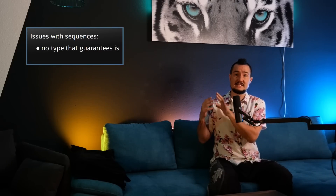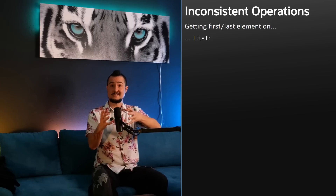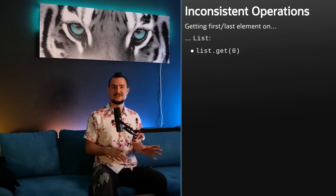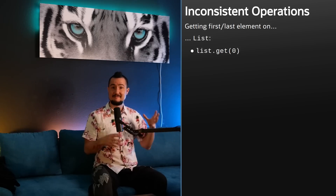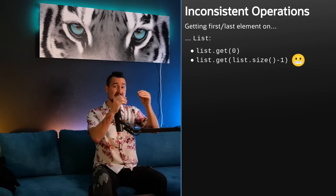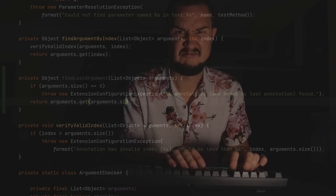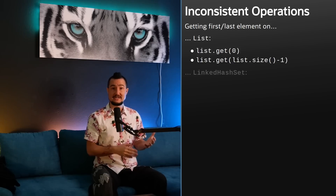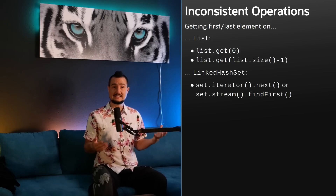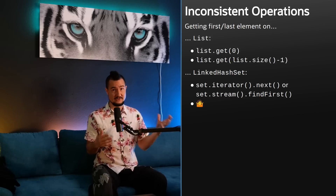The other half is that sequence-related operations are very inconsistent. Need the first element of a list? list.get(0) is there for you — already somewhat imprecise — but wait till you try to get the last element. Few things in Java have been as bad for my teeth as typing out list.get(list.size()-1). Things are even worse for LinkedHashSet: getting the first element requires either asking the iterator for the next element or using findFirst() on a stream, and getting the last element isn't even possible without iteration.